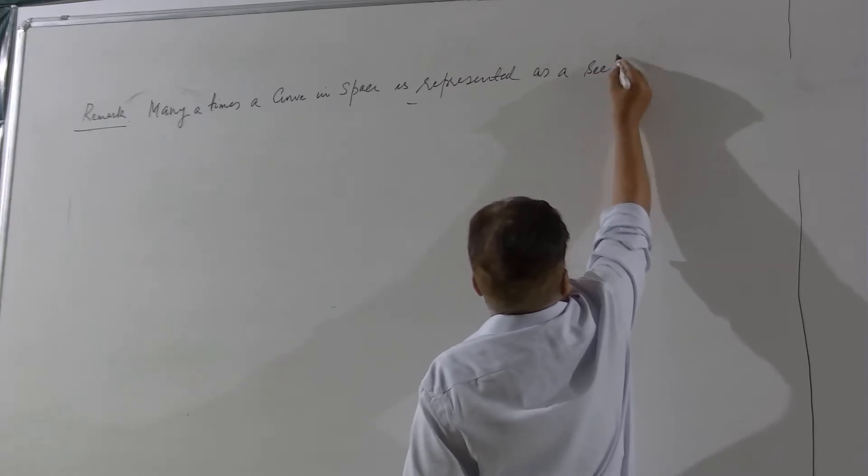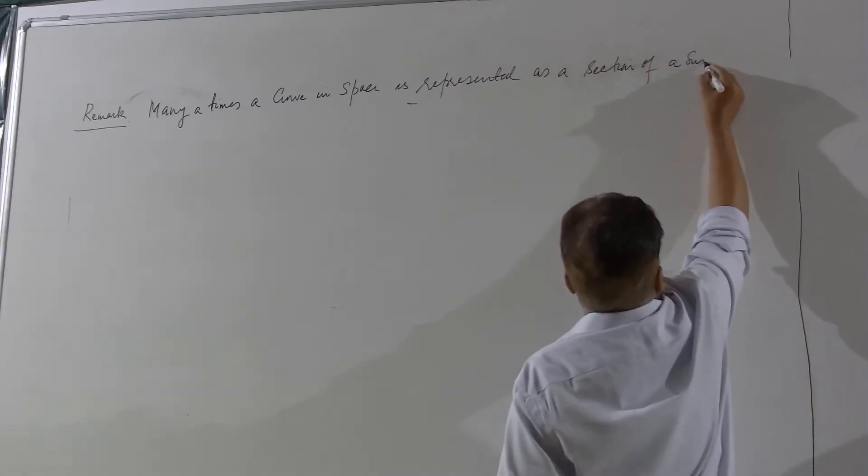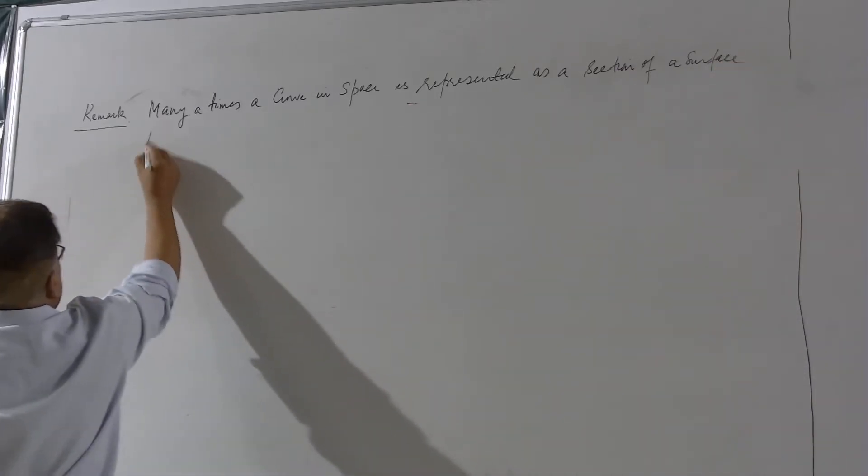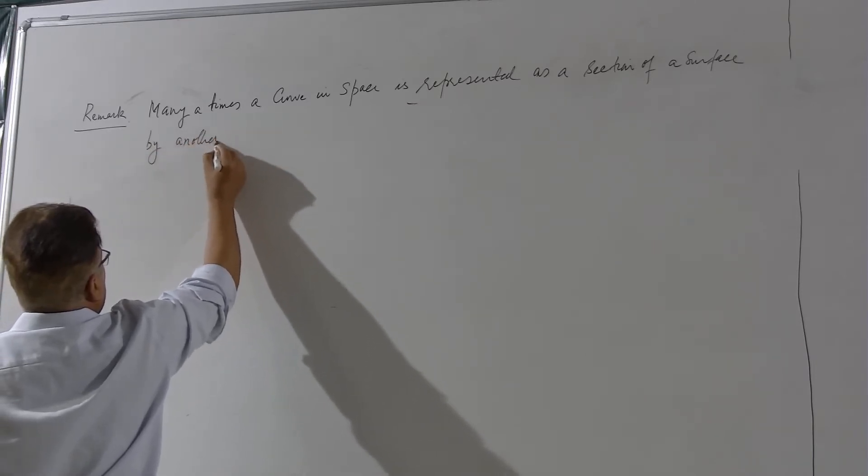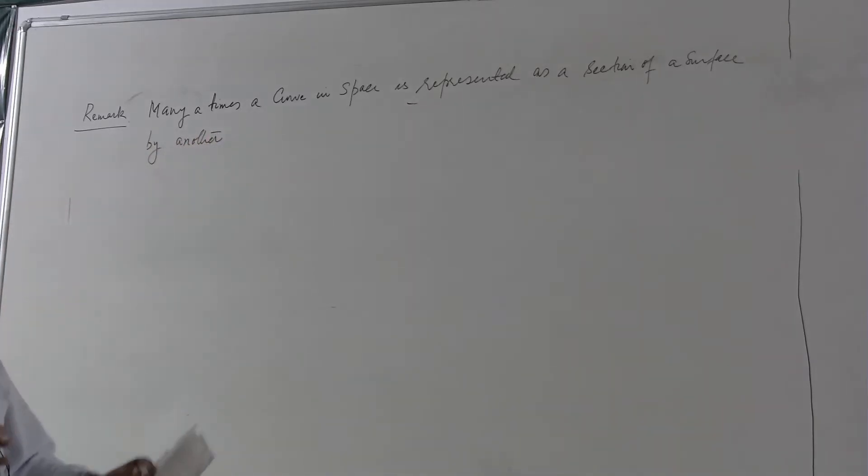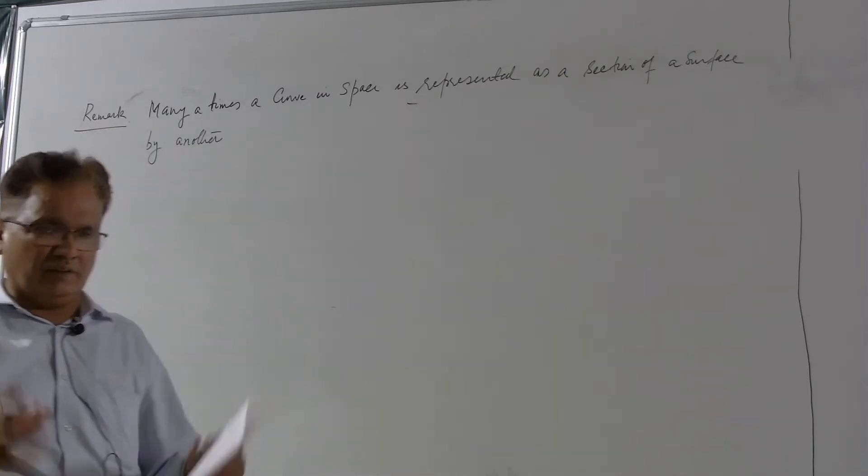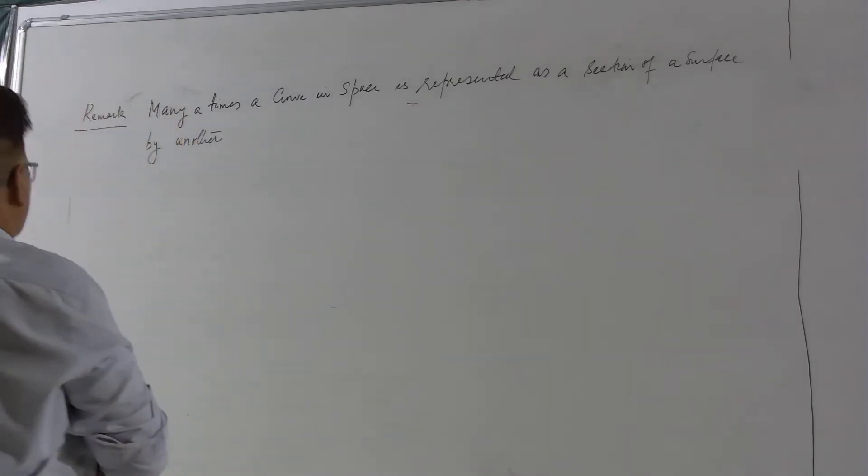That is when you take two surfaces and both of them are intersecting each other. So their section will give you a curve which lies in space.